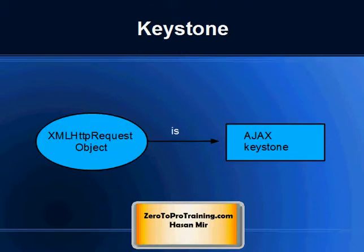The XMLHTTP Request Object is a keystone to Ajax — Ajax is not possible without this object. It is used to exchange data with the server behind the scenes. In other words, it makes it possible to update parts of a web page without refreshing the whole page.